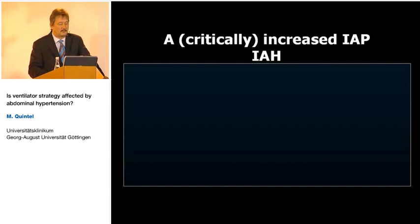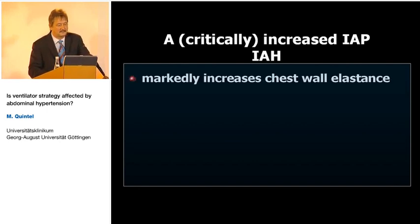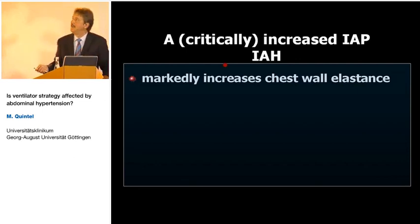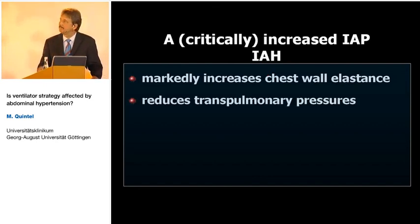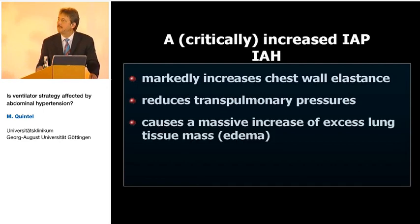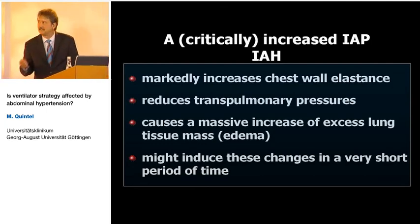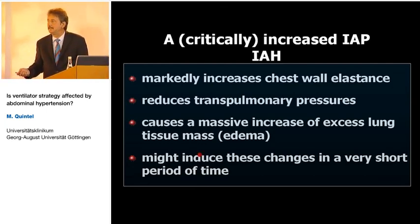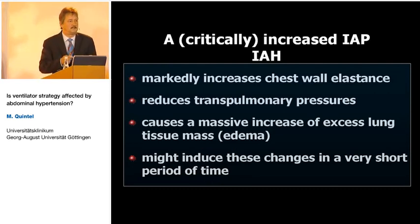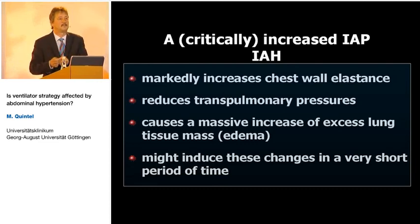In closing: critically increased intra-abdominal pressure — intra-abdominal hypertension — markedly increases chest wall elastance, and therefore markedly reduces trans-pulmonary pressure. It causes a massive increase of excess tissue mass and edema, and importantly, from our study, these changes can occur within a very short period — the massive increase of edema was observed within the first twenty minutes. Thank you very much for your interest.